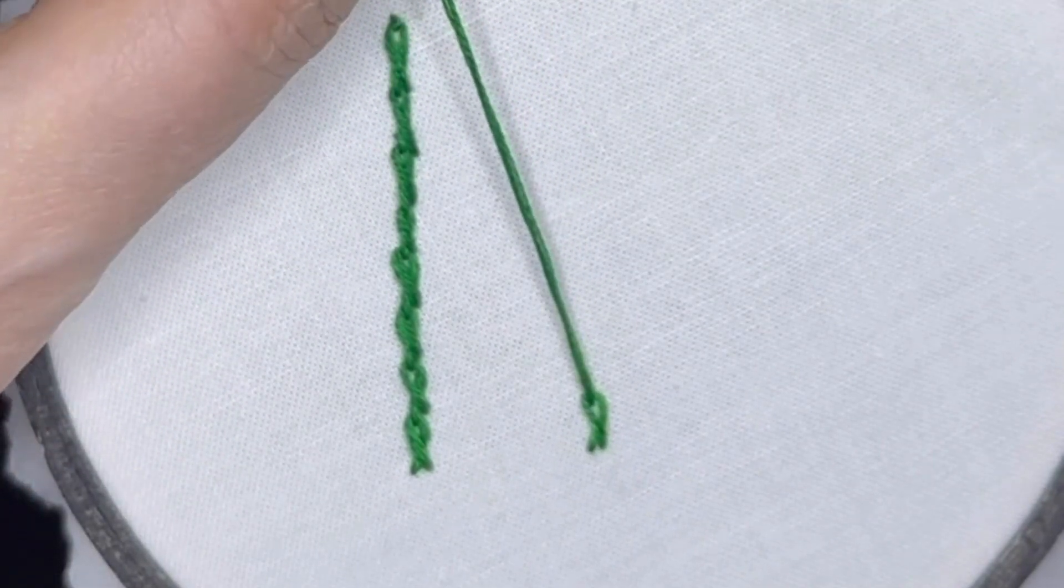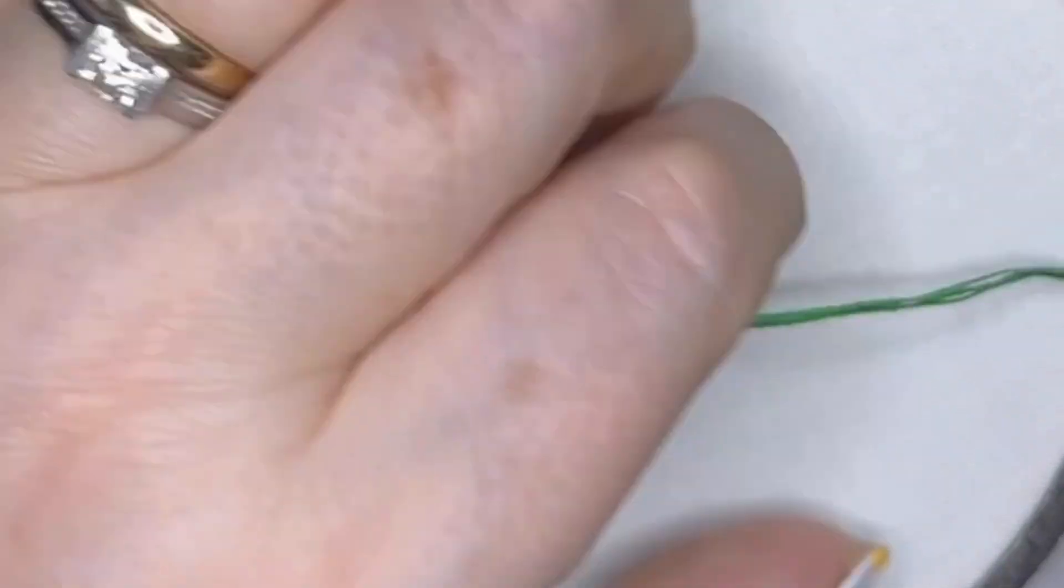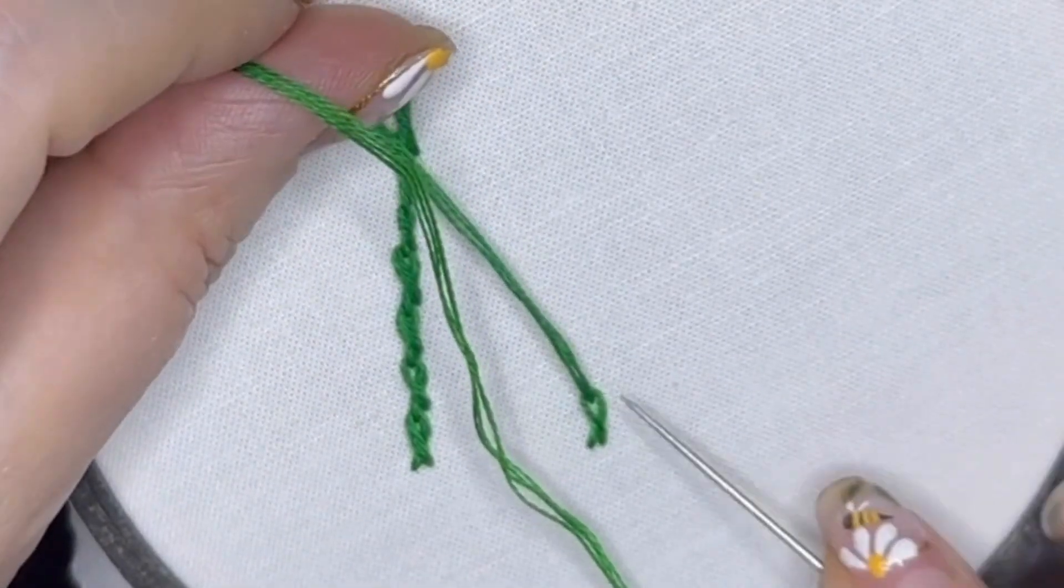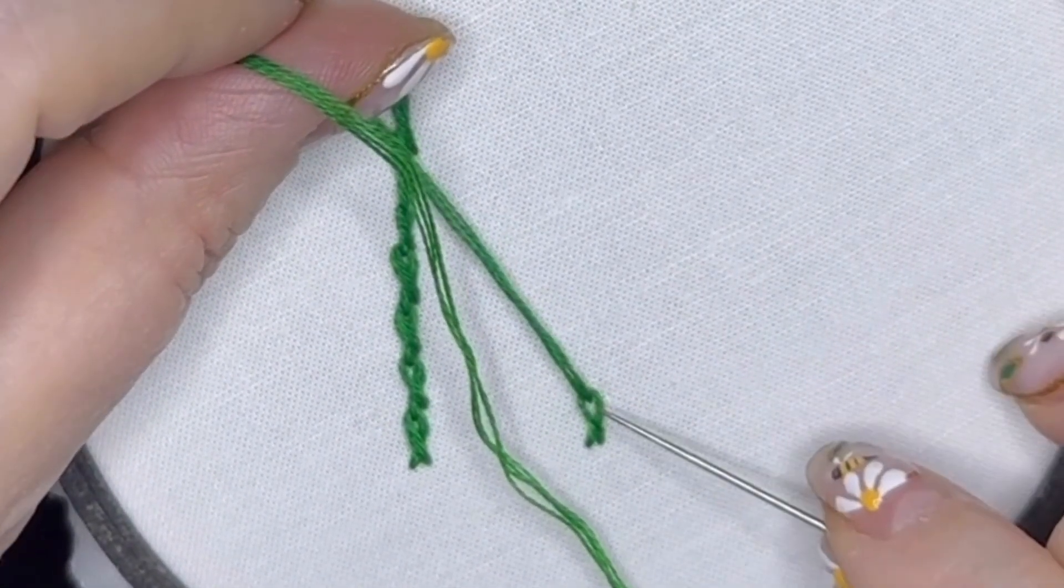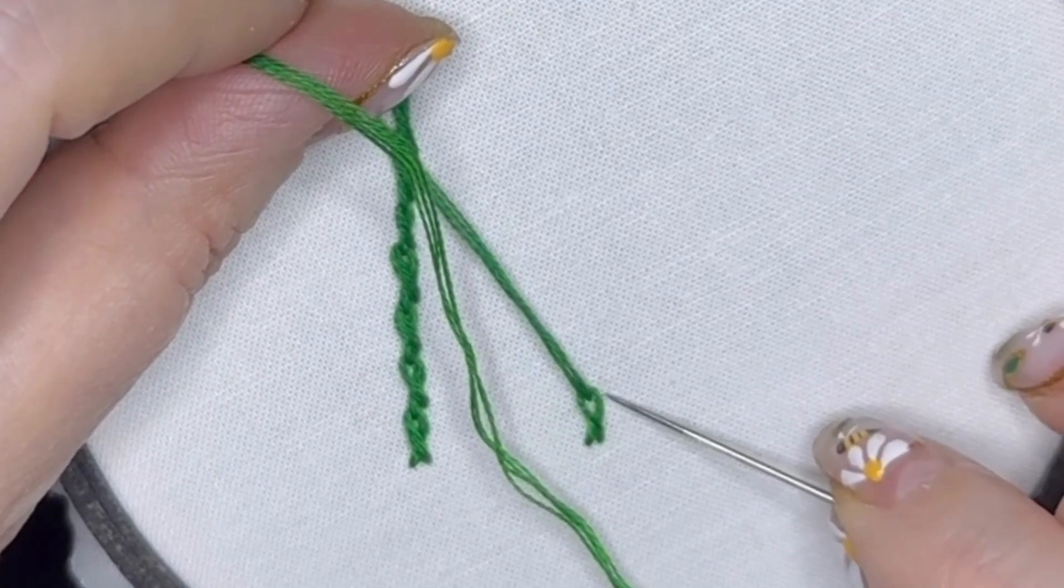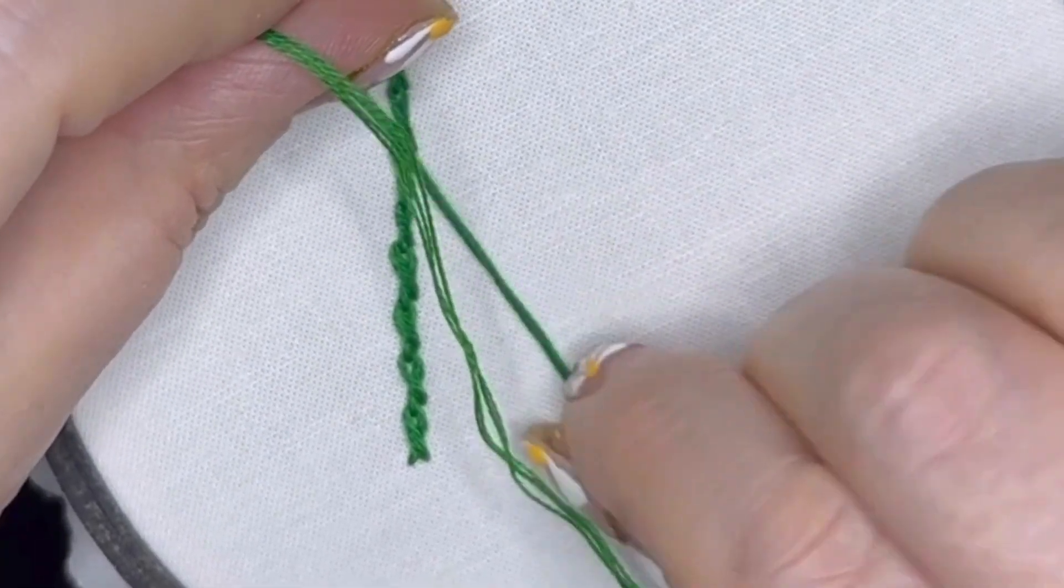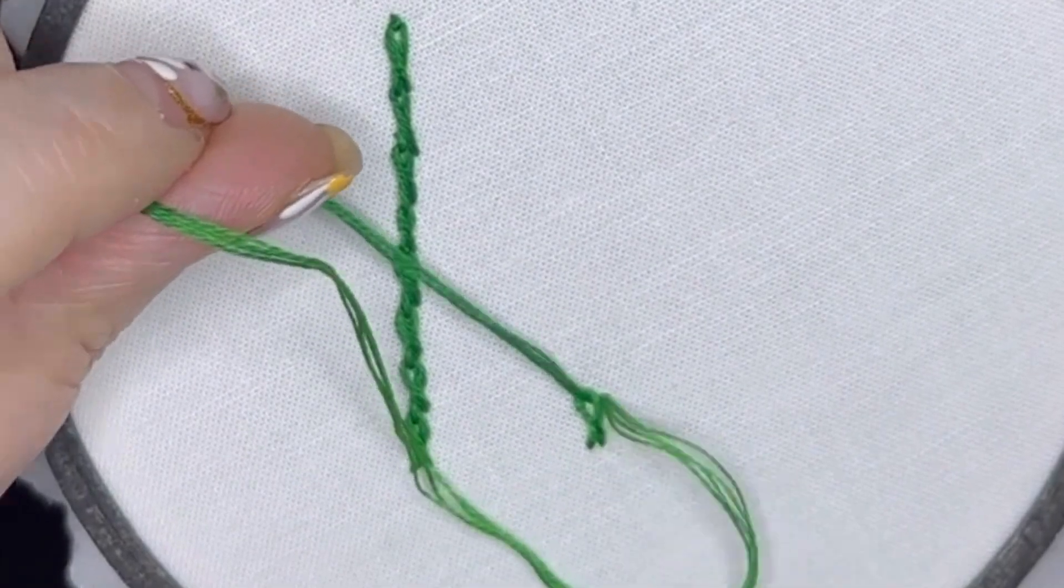This next bit is very important: you're going to go back down through the fabric next to that stitch, so it's going to be level with where you've just come up through the fabric and directly above where you came up through the fabric before.